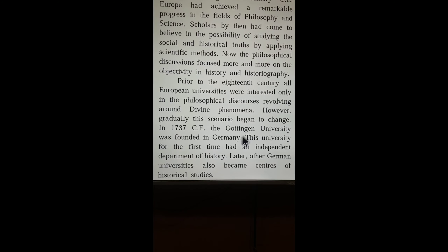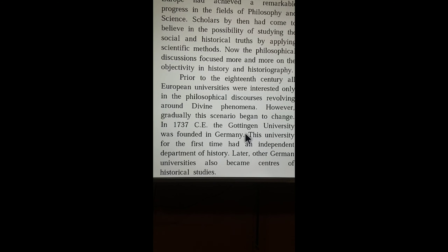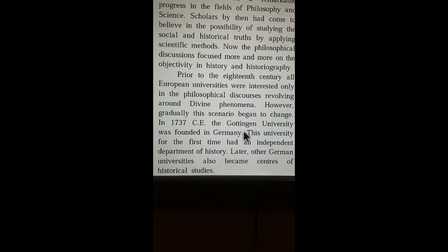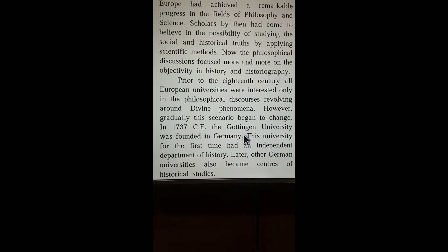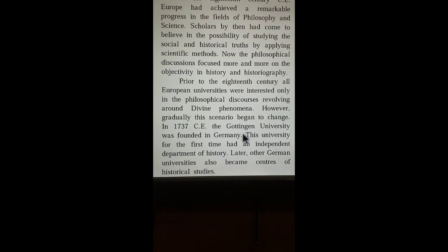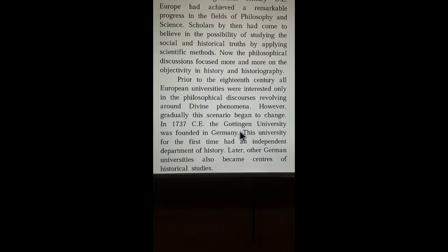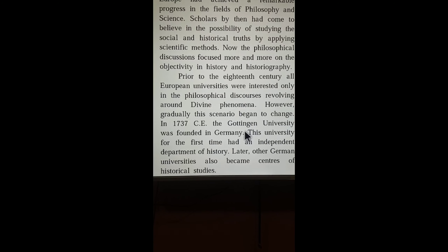In 1737 CE, the Göttingen University, founded in Germany, for the first time had an independent department of history. So if there is a fill-in-the-blank question asking which was the first university to begin an independent department of history, the answer is Göttingen University. If asked in which country, the answer is Germany. Later, other German universities also became centers of historical studies, and today universities like Mumbai University, Pune University, and Kolhapur University also have independent history departments.